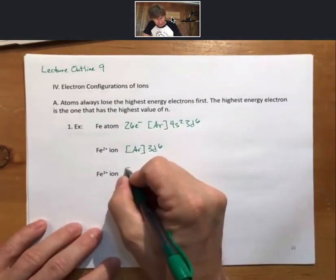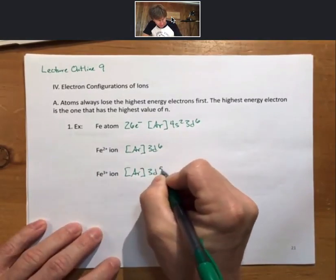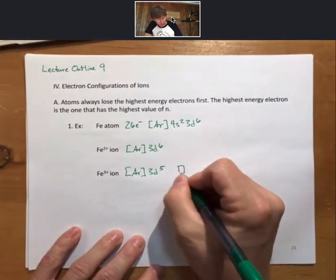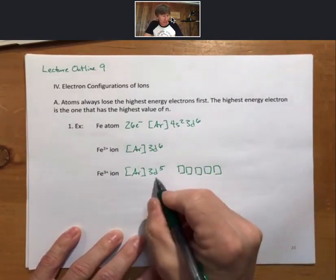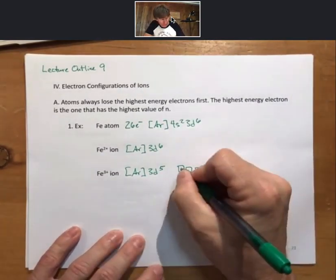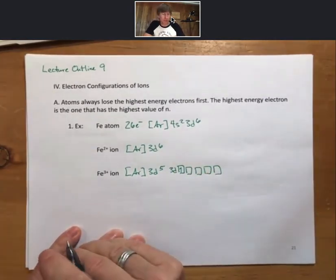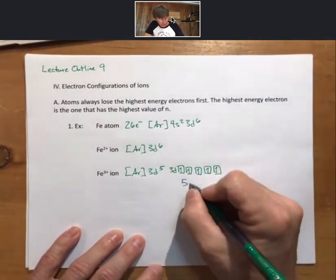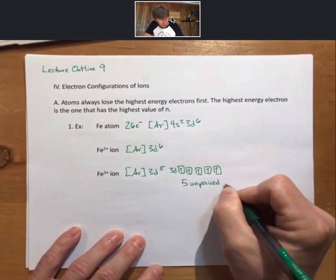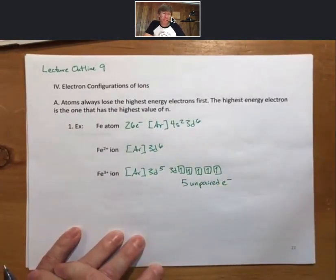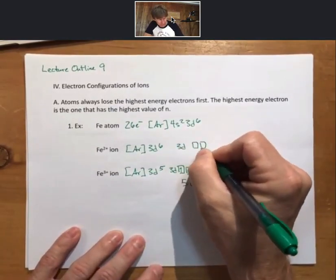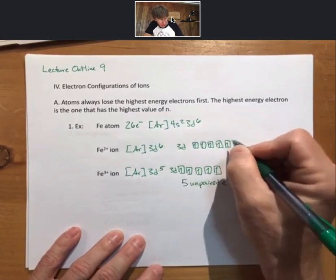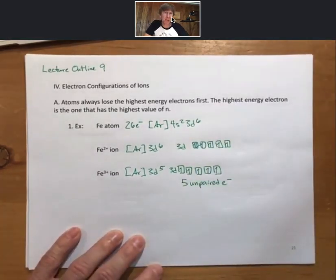And we're left with argon 3d6 and argon 3d5. We noted before that since the d sub-level has five orbitals, the 3d portion of the orbital energy diagram would have five unpaired electrons. While iron 2 plus has four unpaired electrons. One, two, three, four, five, six, has four unpaired electrons.